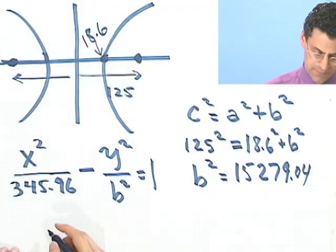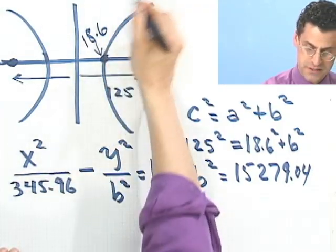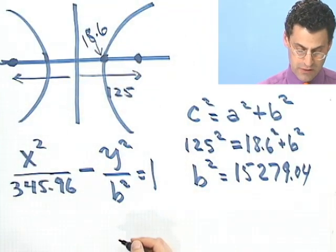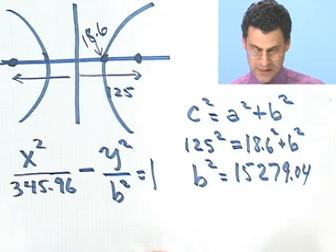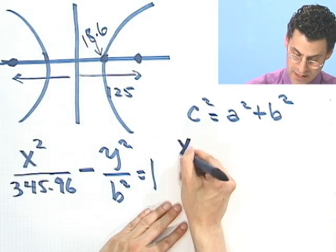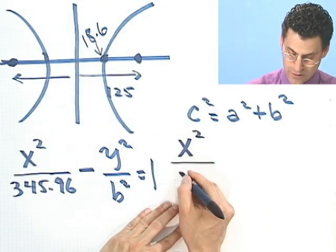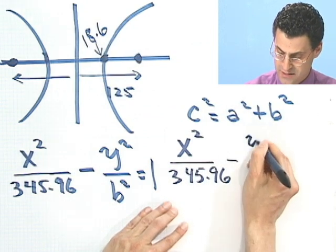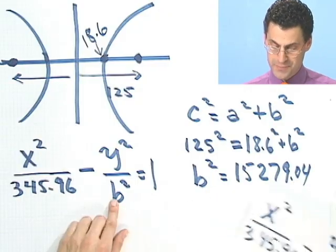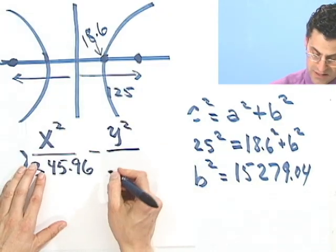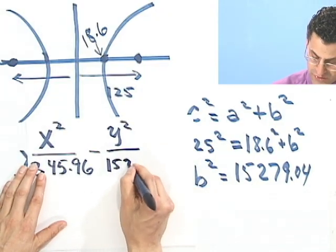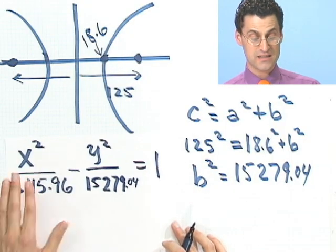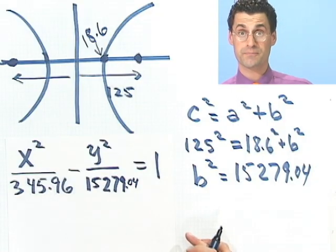The formula for this hyperbola that we know this boat is on is x²/345.96 - y²/15,279.04 = 1. There is the equation.